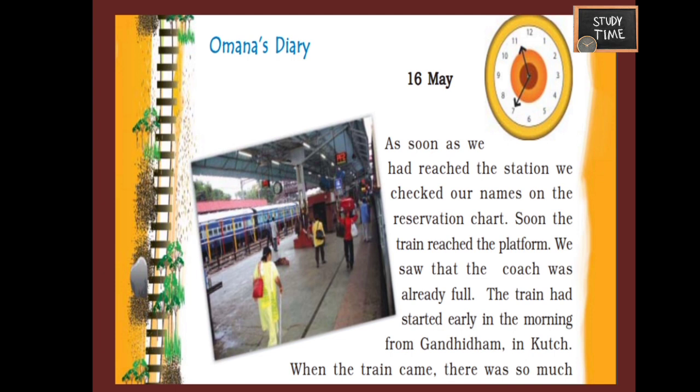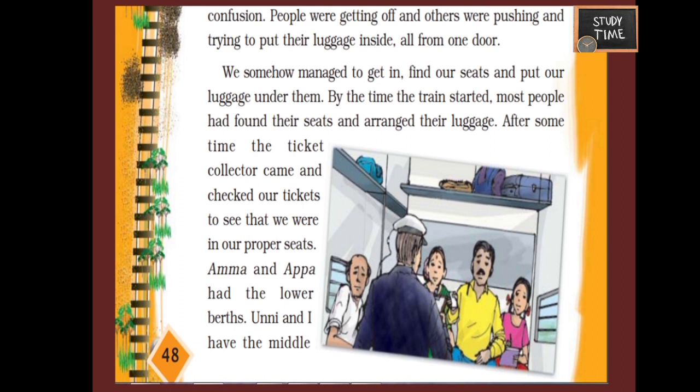This is Omina's diary. Omina writes: as soon as they reached the station they checked their names on the reservation chart. Soon the train reached the platform. They saw that the coach was already full. The train had started early in the morning from Gandida in Kutch. When the train came, there was much confusion because a few people tried to get down and many people tried to get into the train.